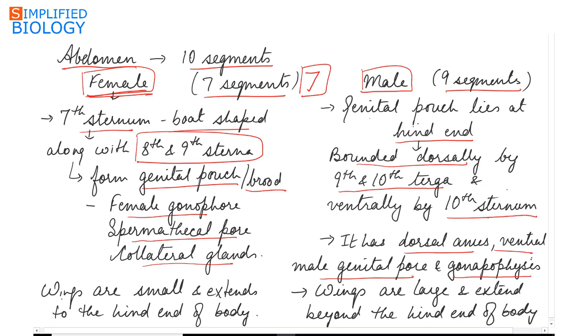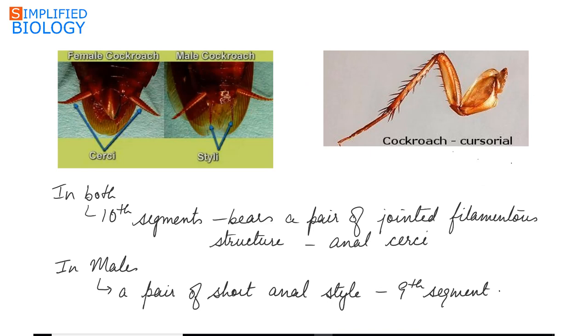Wings in the female are small and extend to the hind end of the body, while wings in the male are large and they extend beyond the hind end of the body.